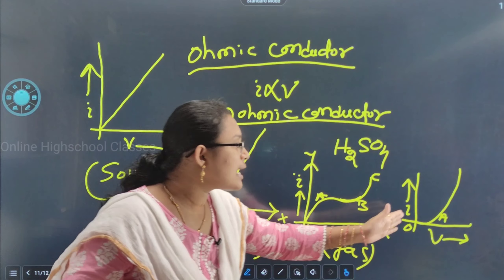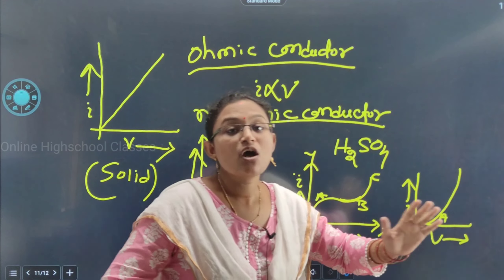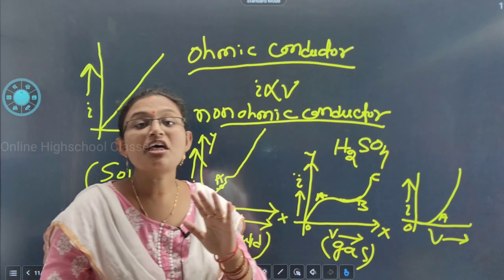But beyond A, when the filament gets heated more, more electrons are liberated from the filament, so there will be a sharp increase of current. This determines the shape of the vacuum tube graph.